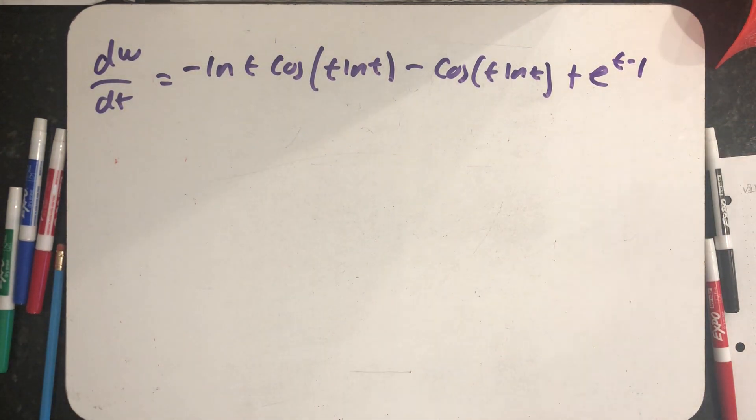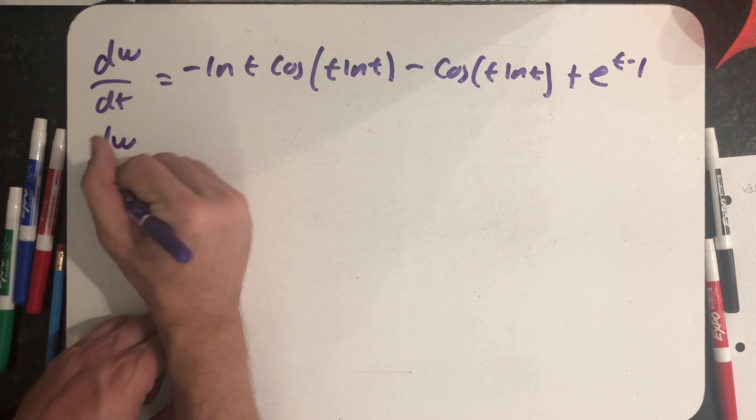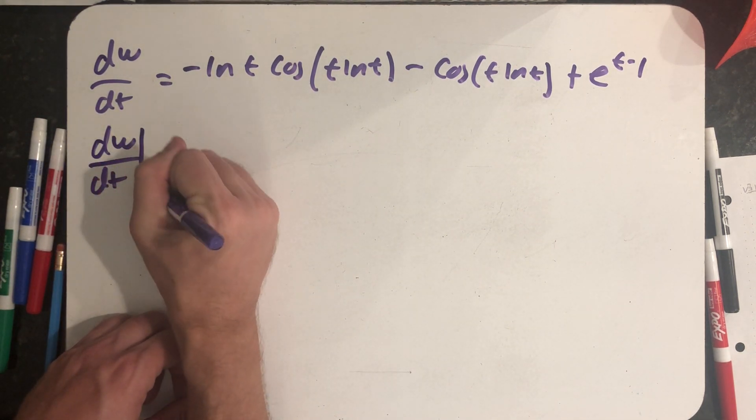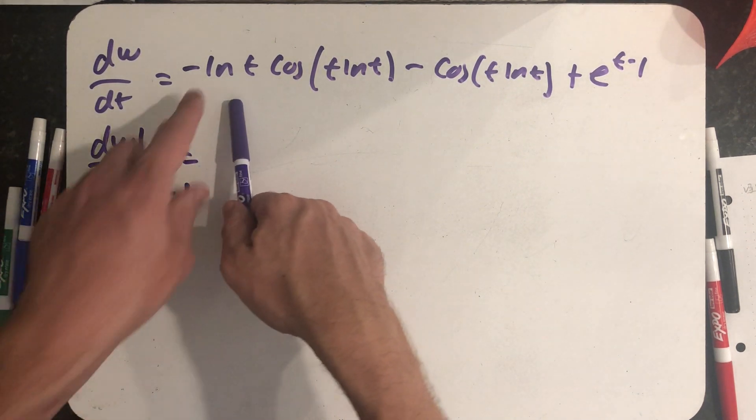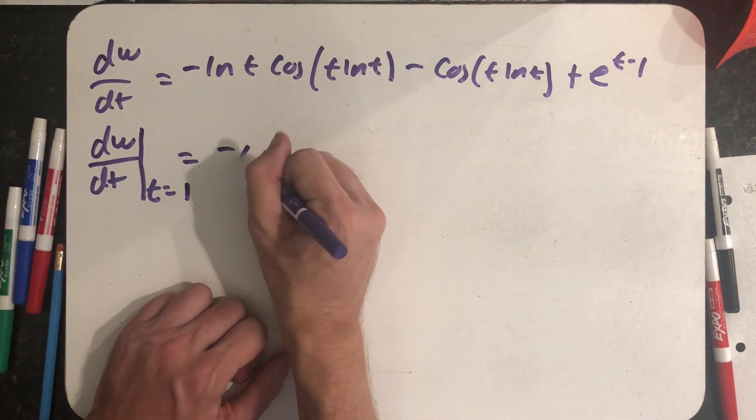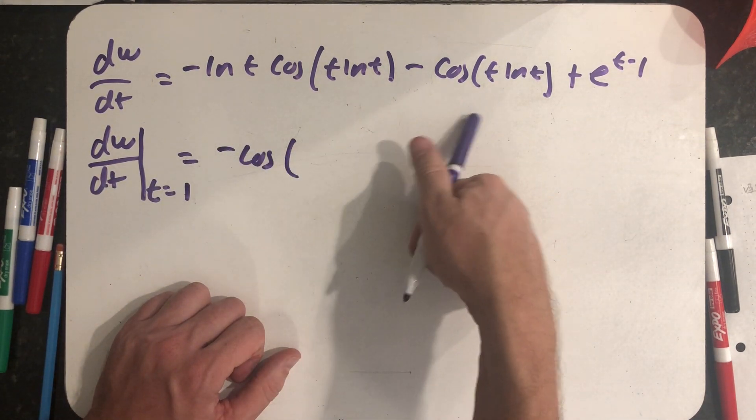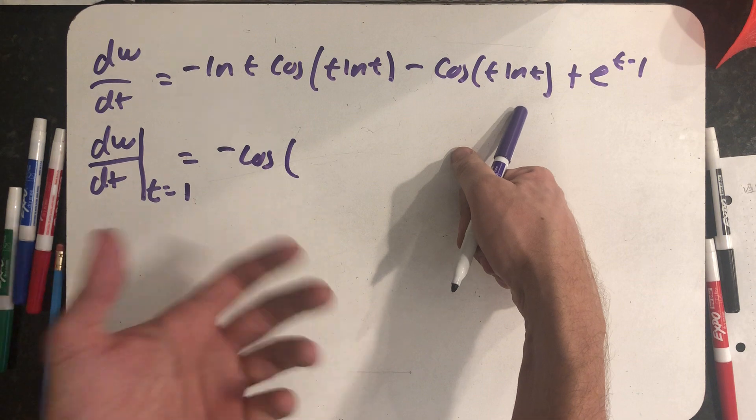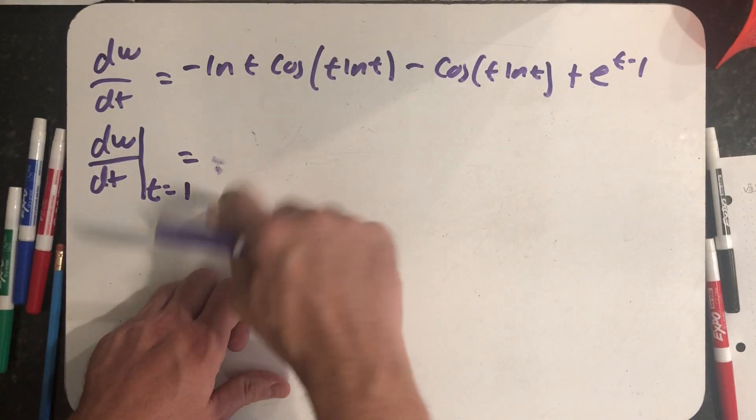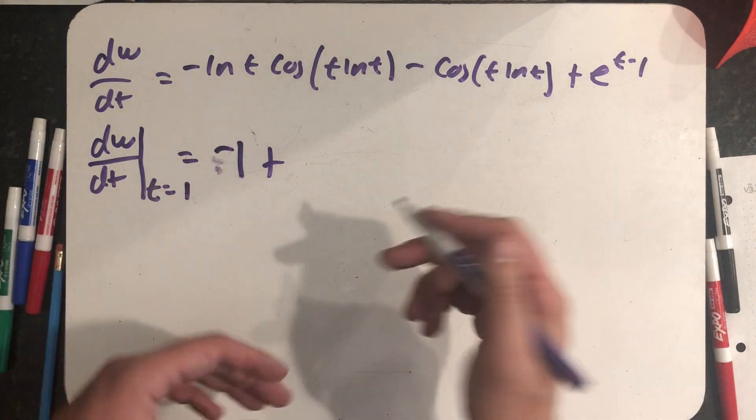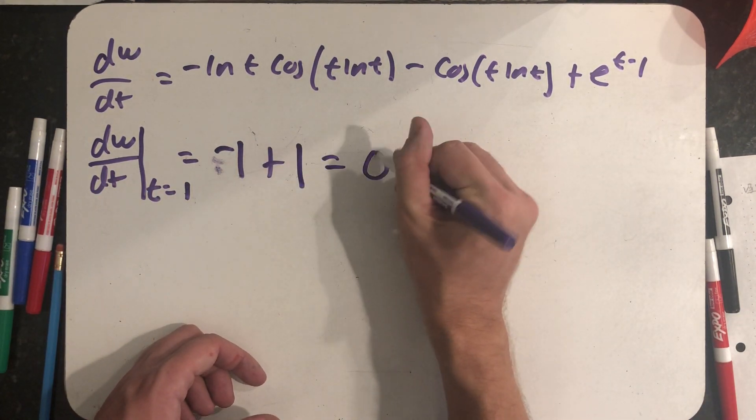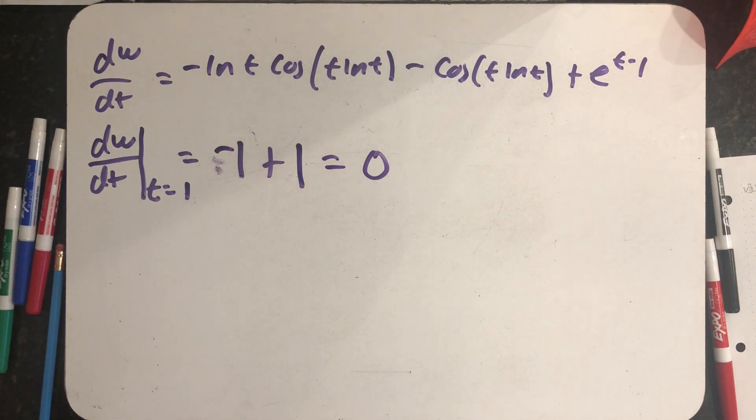I'm asked to evaluate this when t is equal to one. All right, well, the natural log of one is zero, so I don't have to worry about any of this. So I have minus cosine of one times the natural log of one, minus cosine of zero, well, minus cosine of zero is minus one, plus e to the one minus one, e to the zero is one, and I get zero. At the moment t equals one, dw/dt is zero.